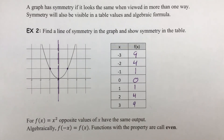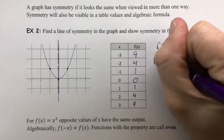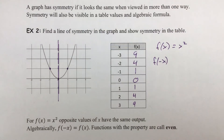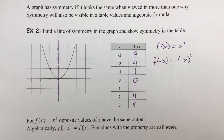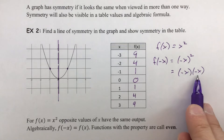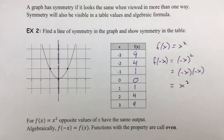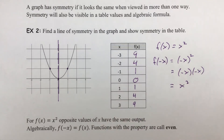Algebraically, how we could prove a function is even is to take the opposite of your input — negative x — and plug it in to see if it turns out to be the same as the original function. Our original function is f(x) = x squared. If we plug in negative x, we have (−x) squared, which is the same as negative x times negative x. The negatives become positive, and we get back x squared. That tells us that no matter what number you plug in — whether you plug in 10 or negative 10 — the result is going to be the same, in that case 100.